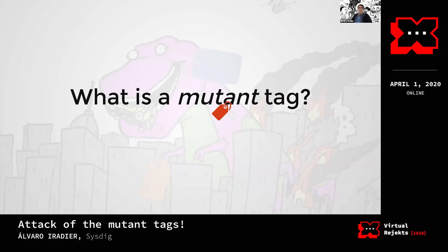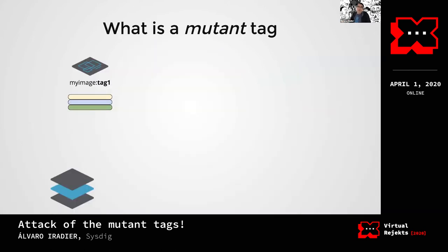Okay, we know the basic concepts, we know what a tag is. So what is a mutant tag? We could call it a mutable tag instead of a mutant tag, but really 'mutant' sounds much cooler. Could the X-Men rock if they were a bunch of mutable people wearing funny clothes? Sure not. So beware the mutant tags! Let's see an example: we start by building an image locally - 'my-image' colon 'tag-one' - and we push that image to our repository.